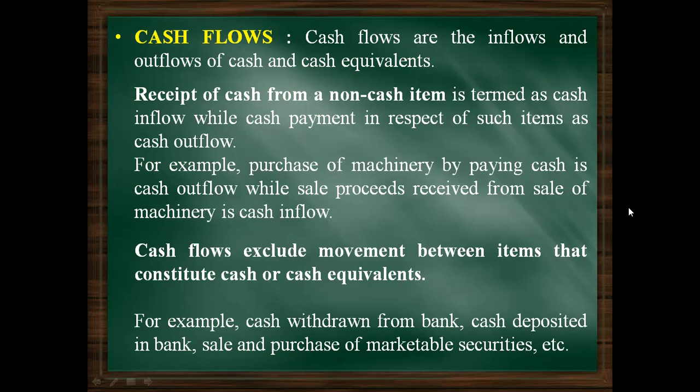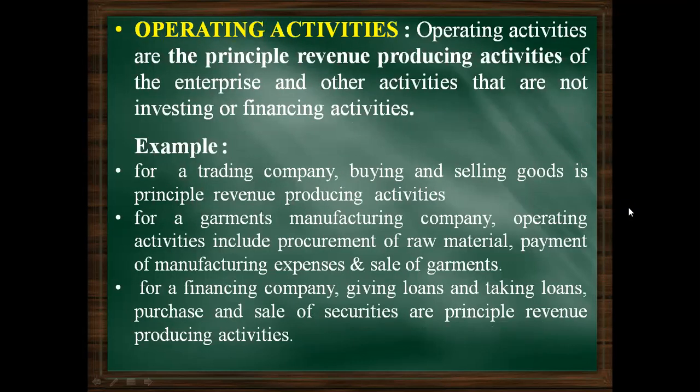In this chapter we study three types of activities and find cash flow from each. The first is operating activity — the principal revenue-producing activity of the enterprise, and other activities that are not investing or financing. All activities that help generate revenue are operating activities, meaning the main business earning activity. For a trading company, buying and selling goods is the principal revenue-producing activity.